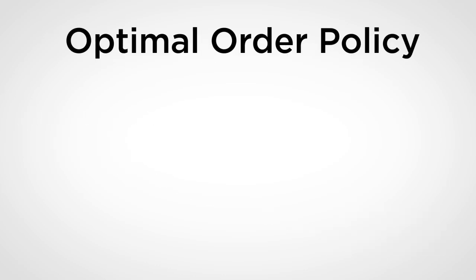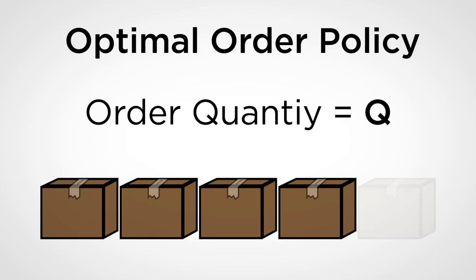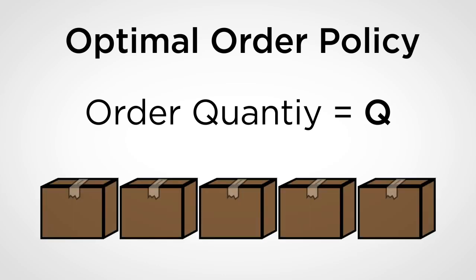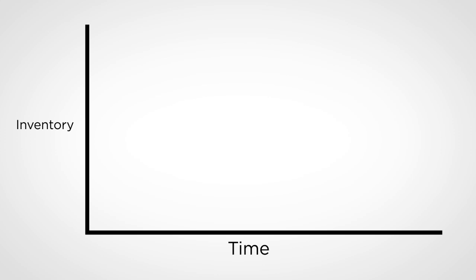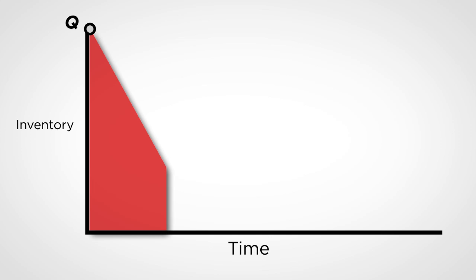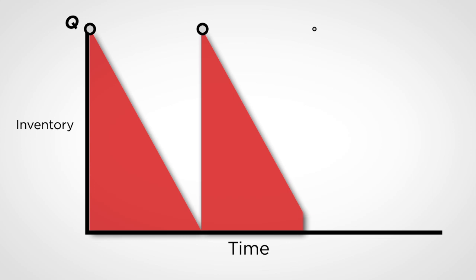To arrive at the optimal policy, suppose you order a quantity of Q each time you place an order. Since the order arrives instantaneously, you only order when the inventory hits zero. Assuming demand arrives uniformly, it is useful to visualize the inventory on a graph. On the horizontal axis we have time, and on the vertical axis we have the inventory on hand. Suppose at time zero you start with Q units in inventory. You burn through inventory at a uniform rate as demand arrives until it hits zero, at which point you place an order of Q units again to bring inventory back up to Q, and this continues indefinitely.